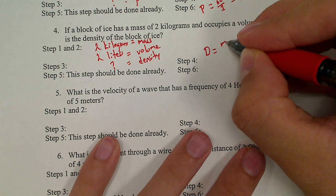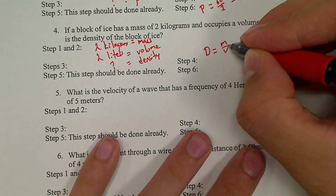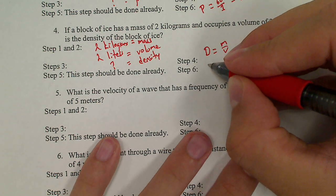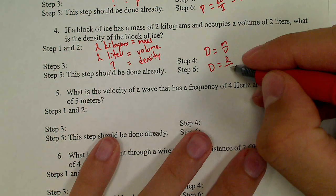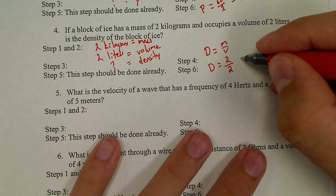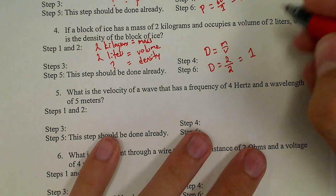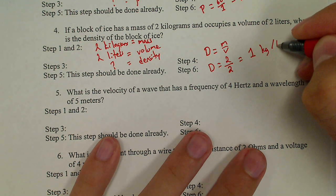D equals m over v. Density equals mass divided by volume. D equals my mass is 2 divided by volume, my volume is 2. 2 divided by 2, that is 1. 1 kilogram per liter.